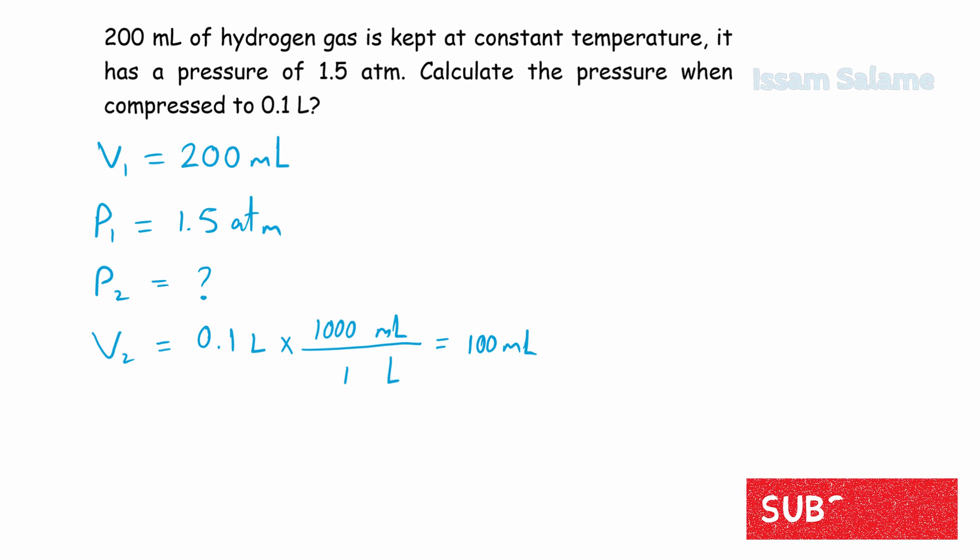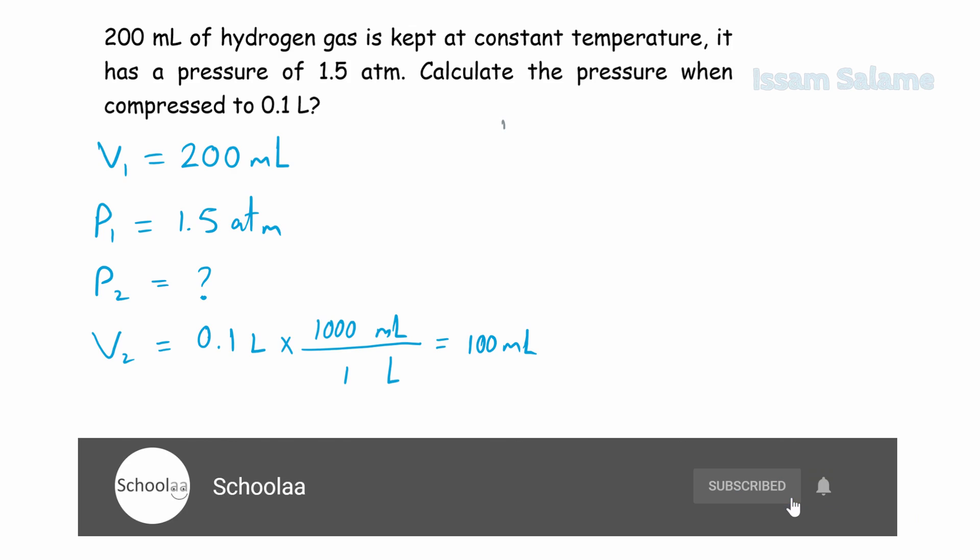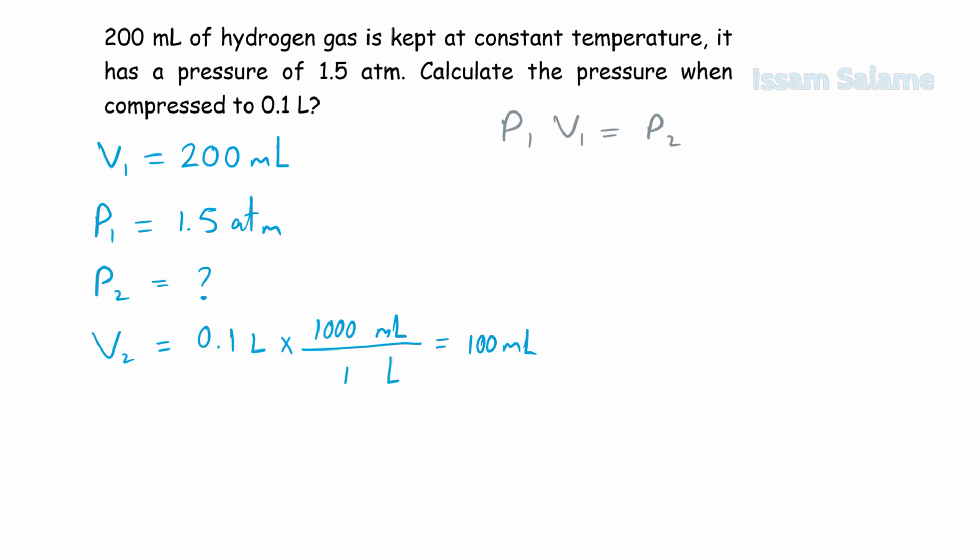If you need more practice about conversion factors, I will keep a useful link for you in the description box. And now we can apply Boyle's Law formula. P1V1 equal to P2V2. Then P2 is equal to P1V1 over V2. We replace the variables by their values, cancel the similar units, and then we do the math. P2 is equal to 3 atmosphere.